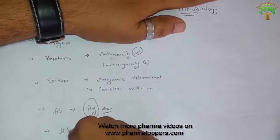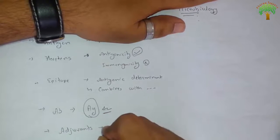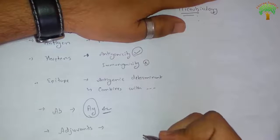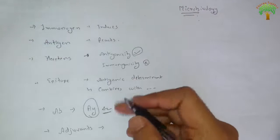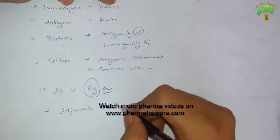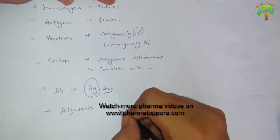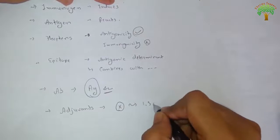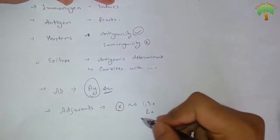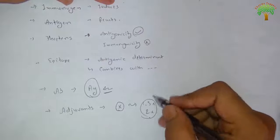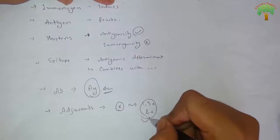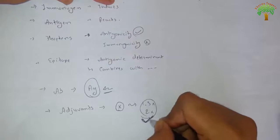Next is adjuvants. Adjuvants are substances that can enhance the immune response to an immunogen. For example, if an immunogen produces an immune response at level X, an adjuvant can exaggerate that up to 1.5X or 2X. The use of adjuvants is often associated with undesirable side effects such as fever and inflammation.